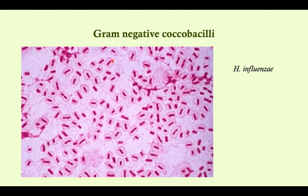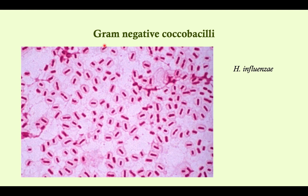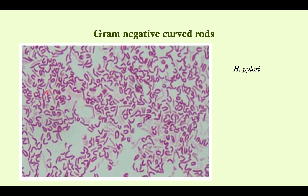These are the curved rods — long, obviously curved organisms. There are going to be three curved rods you need to know. You won't be able to tell one curved rod from the next visually, but they may tell you it grew in alkaline media, or it was urease positive, or it grew at 42 degrees Celsius. Or they may tell you it was taken from the stomach of a patient with an ulcer and then ask which trait it has. Does it grow at 42 degrees? No, that's Campylobacter. Does it grow in alkaline media? No, that's Vibrio. The answer would be that it has urease — that's H. pylori. That's another way they could frame a question about basic microbiology.